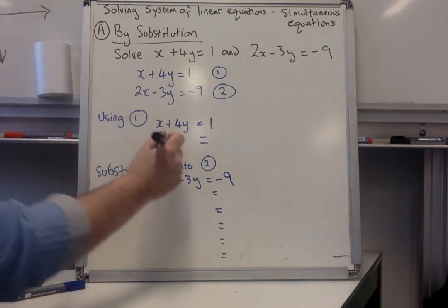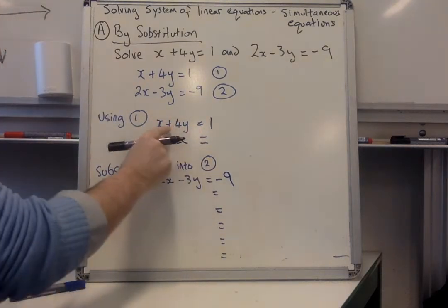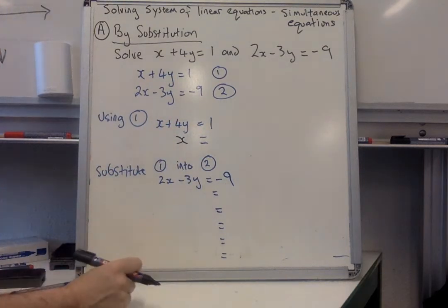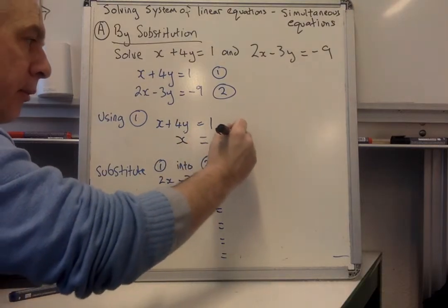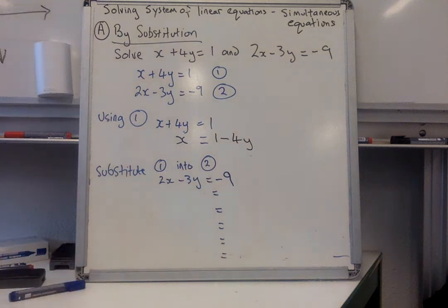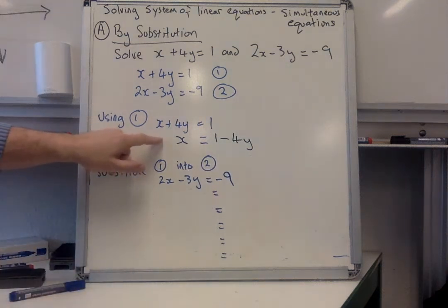So we need x to be isolated, so I need the 4y to disappear from the left hand side. I do that by subtracting 4y from both sides at the same time, and I produce an equation which I'm going to use for substitution.